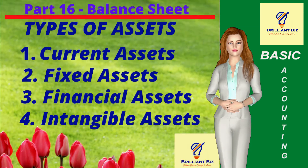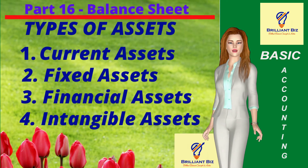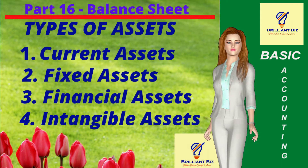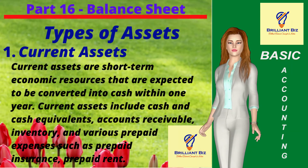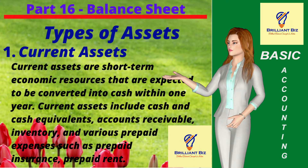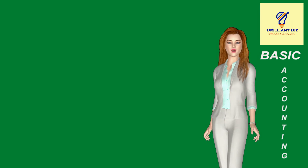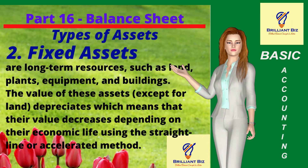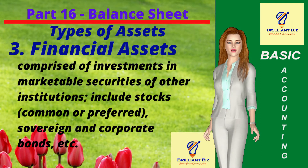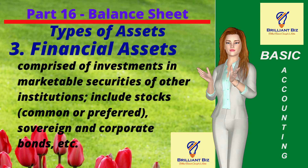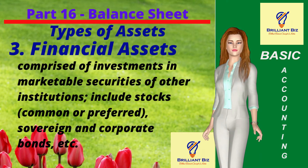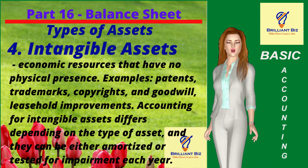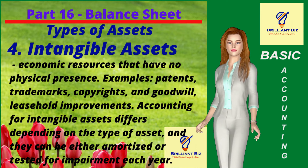There are four types of assets, namely current, fixed, financial, and intangible assets. Current assets are properties or resources that are expected to be converted into cash within one year. Fixed assets are long-term resources such as land, plants, equipment, and buildings. Financial assets are comprised of investments in marketable securities of other institutions like common and preferred stocks, sovereign and corporate bonds, etc.